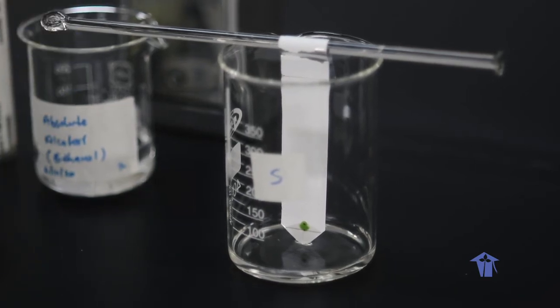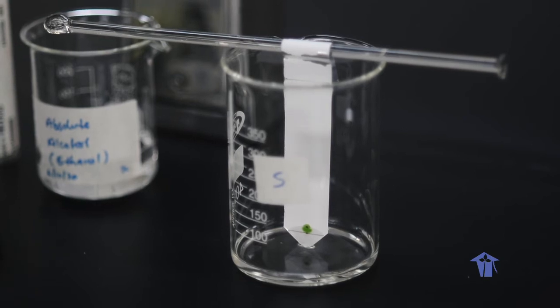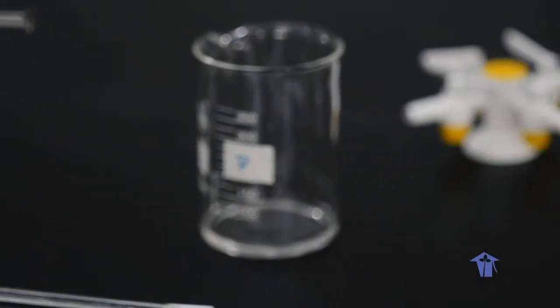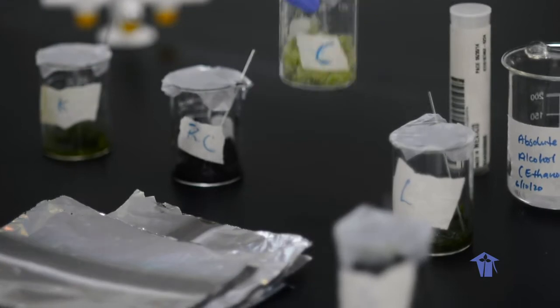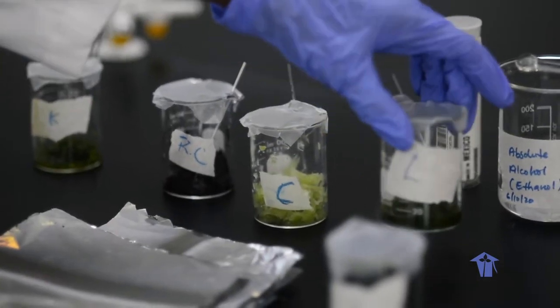What we will do afterwards is to set up the jars for all of our other leaves. We have kale, red cabbage, regular cabbage, as well as lettuce.